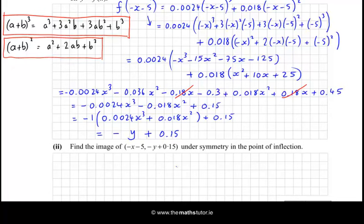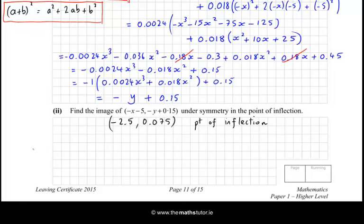And finally, find the image of (-x-5, -y+0.15) under symmetry in the point of inflection. Now remember, the point of inflection was (-2.5, 0.075). So that's my point of inflection. If you're doing symmetry under a point, you go through the point and out the other side the same distance. So it's really like a translation. You go through a translation to the point, and then from the point you move onwards. So what I'm going to do is take -x-5 as an x-coordinate and see how does it get transferred onto -2.5.